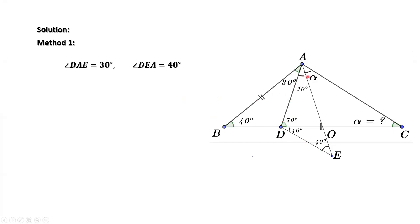This angle is 30, this angle is 40. It's easy to calculate angle ADO, which is 70. That is 30 degrees plus 40 degrees. From this triangle, we have 30 degrees here, 40 degrees here, and 70 degrees here. We can easily find that angle ODE equals 40 degrees.